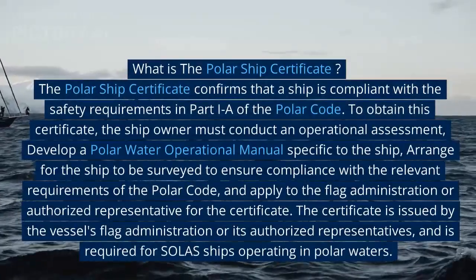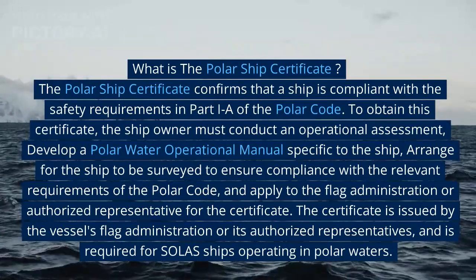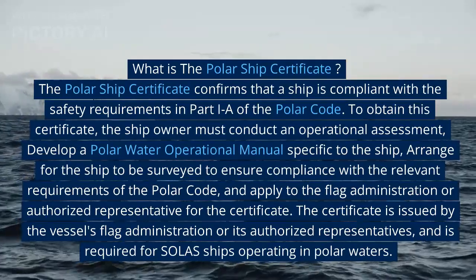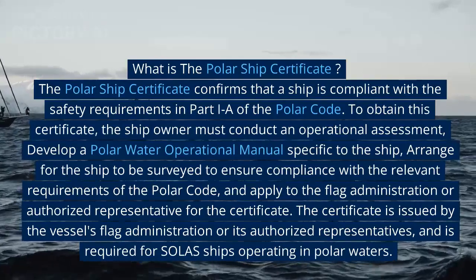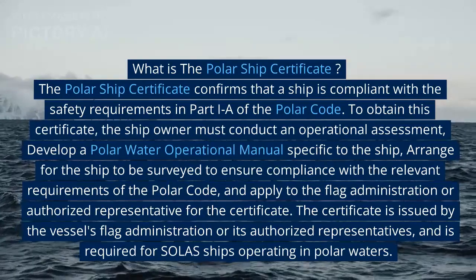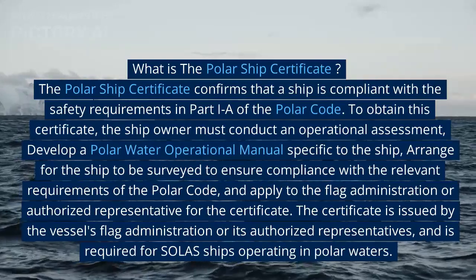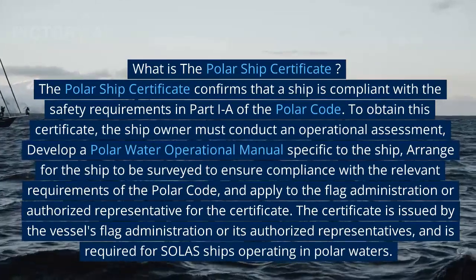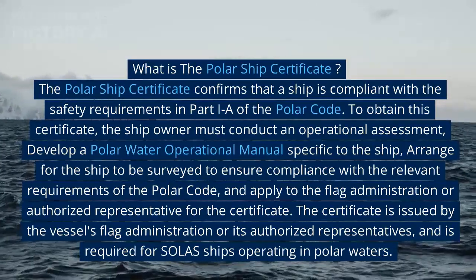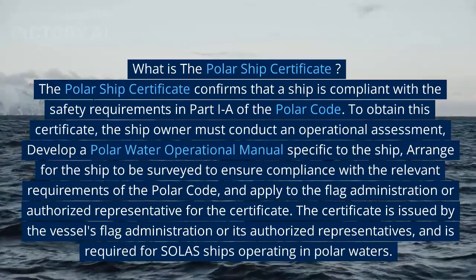The Polar Ship Certificate confirms that a ship is compliant with the safety requirements in Part 1A of the Polar Code. To obtain this certificate, the ship owner must conduct an operational assessment, develop a Polar Water Operational Manual specific to the ship, arrange for the ship to be surveyed to ensure compliance with the relevant requirements of the Polar Code, and apply to the flag administration or authorized representative for the certificate. The certificate is issued by the vessel's flag administration or its authorized representatives, and is required for SOLAS ships operating in polar waters.